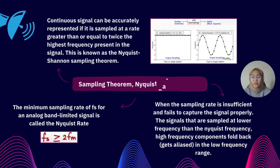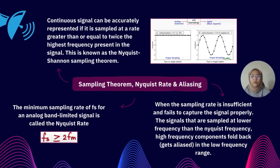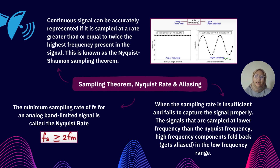What is the sampling theorem? Also known as the Nyquist theorem, a signal can be accurately represented if it is sampled at a rate greater than or equal to twice the highest frequency. This is also known as the Nyquist-Shannon sampling theorem. We want to avoid aliasing because this requires a whole different process which causes inefficiency in our modulation signal.